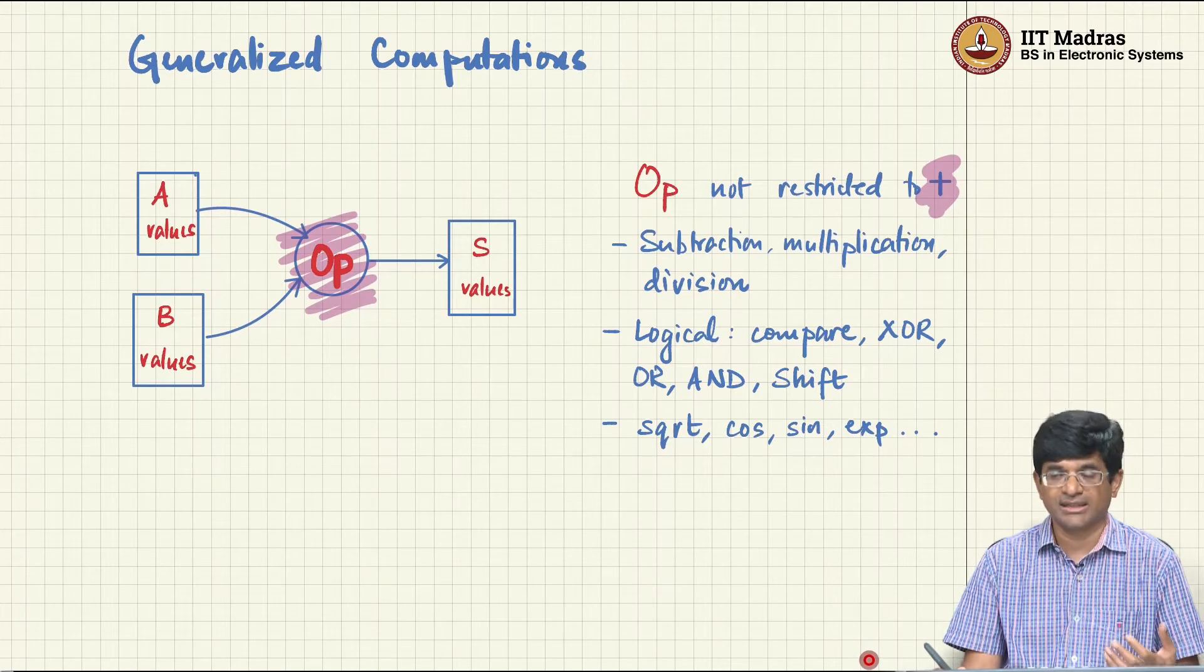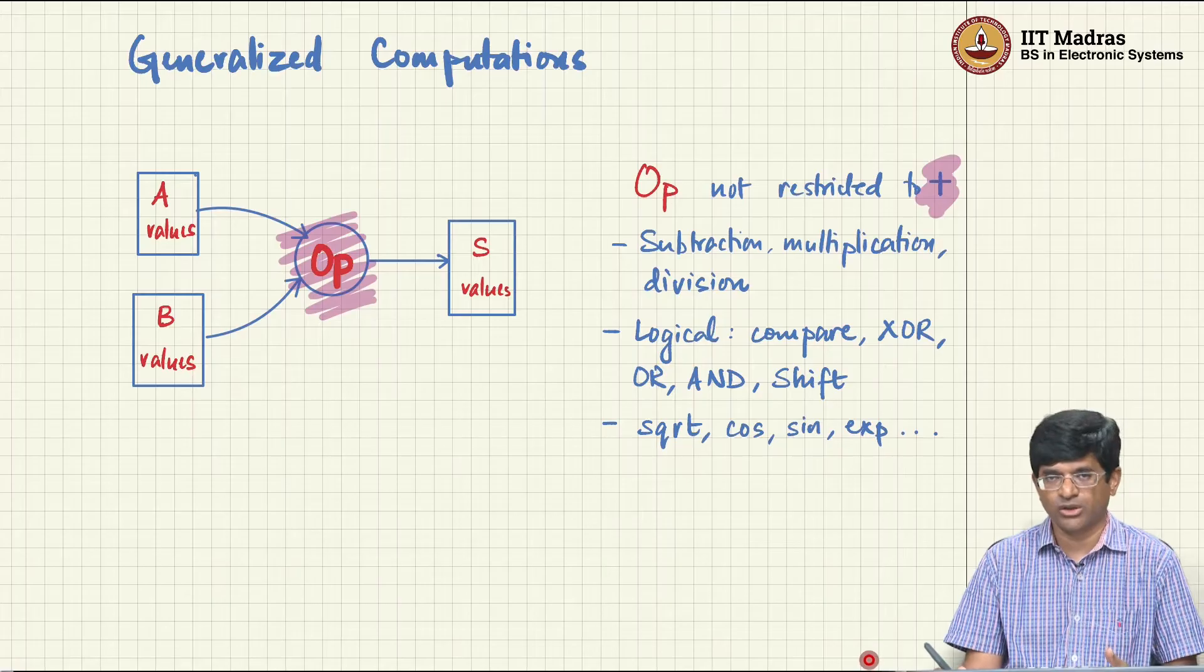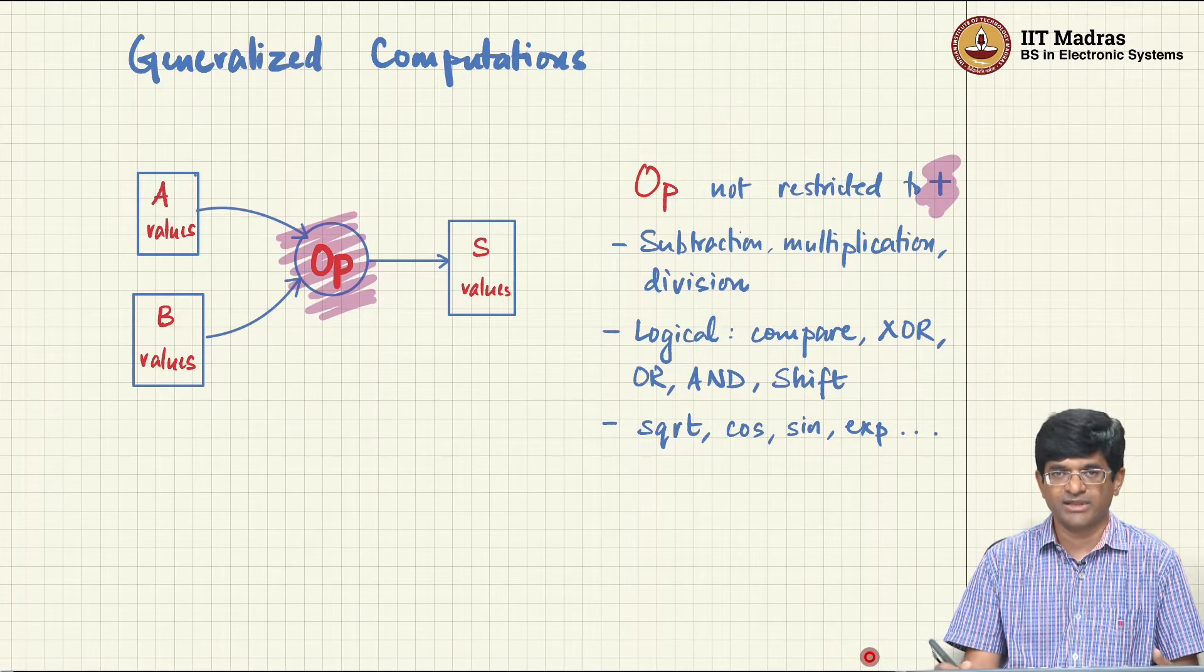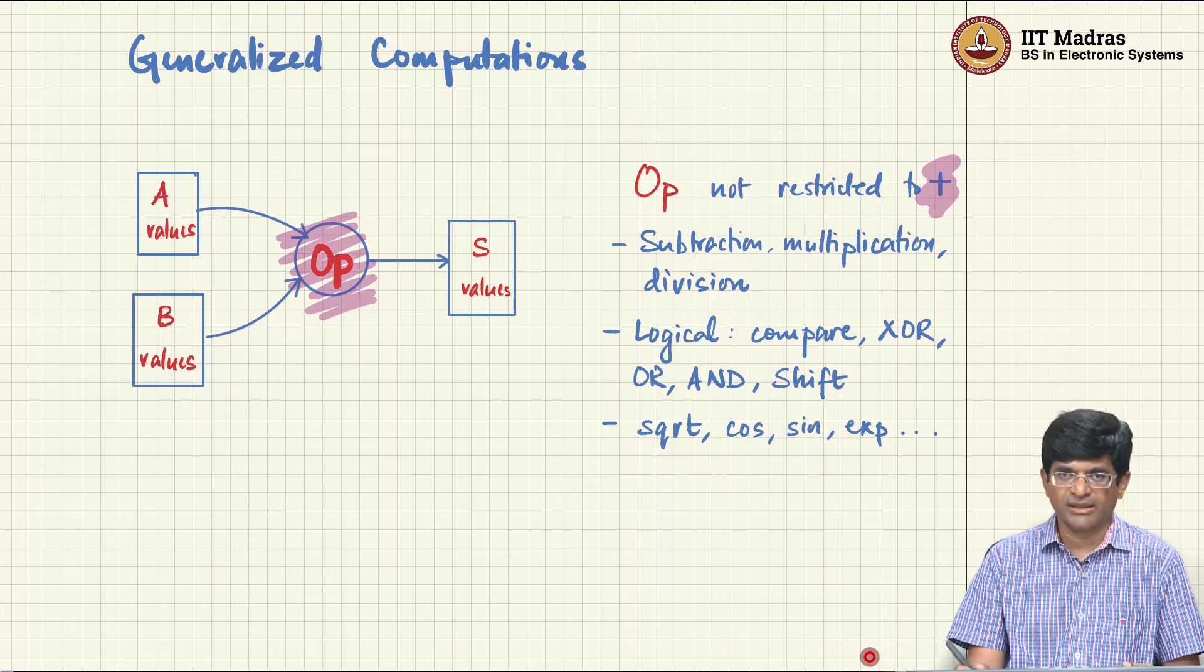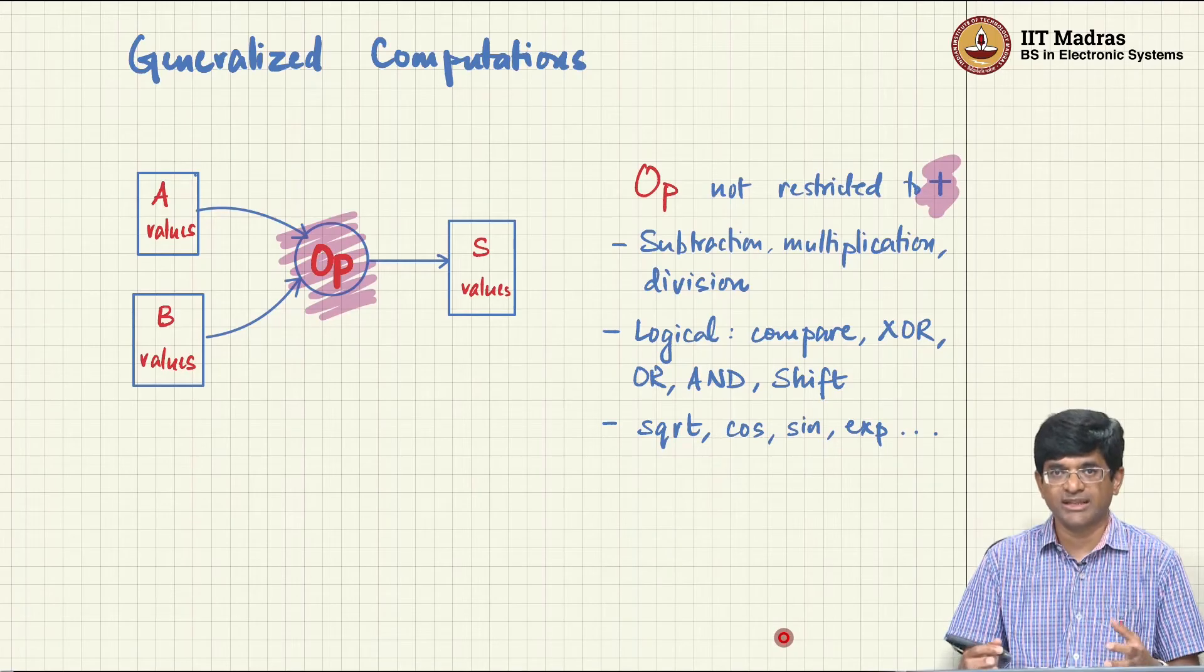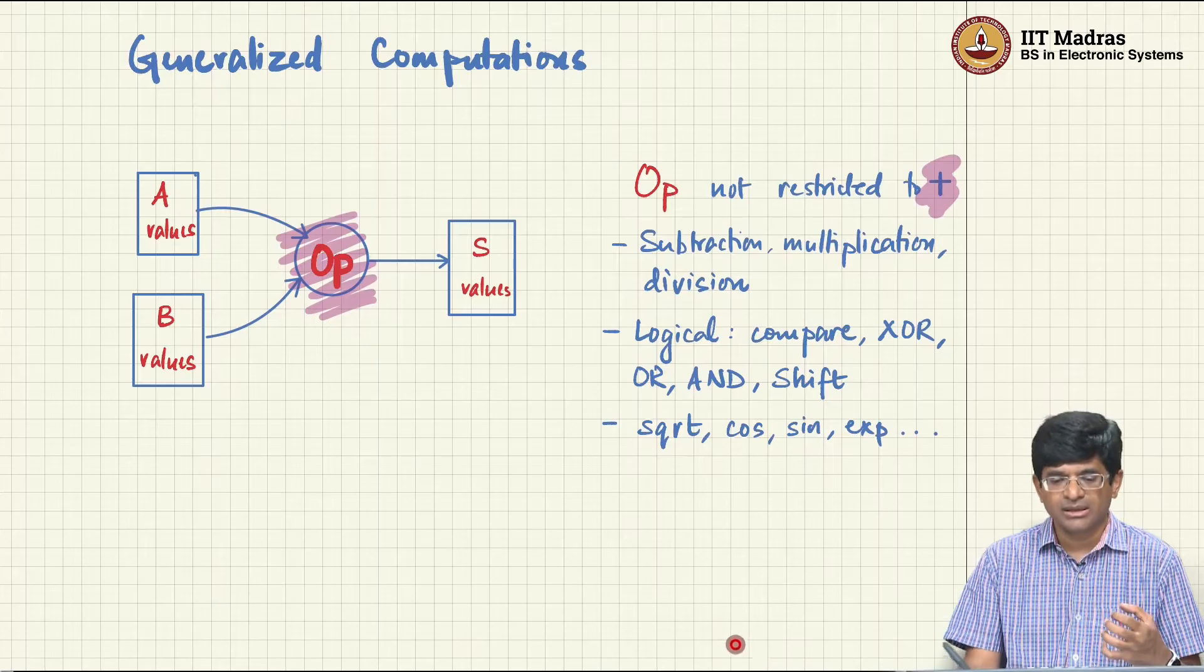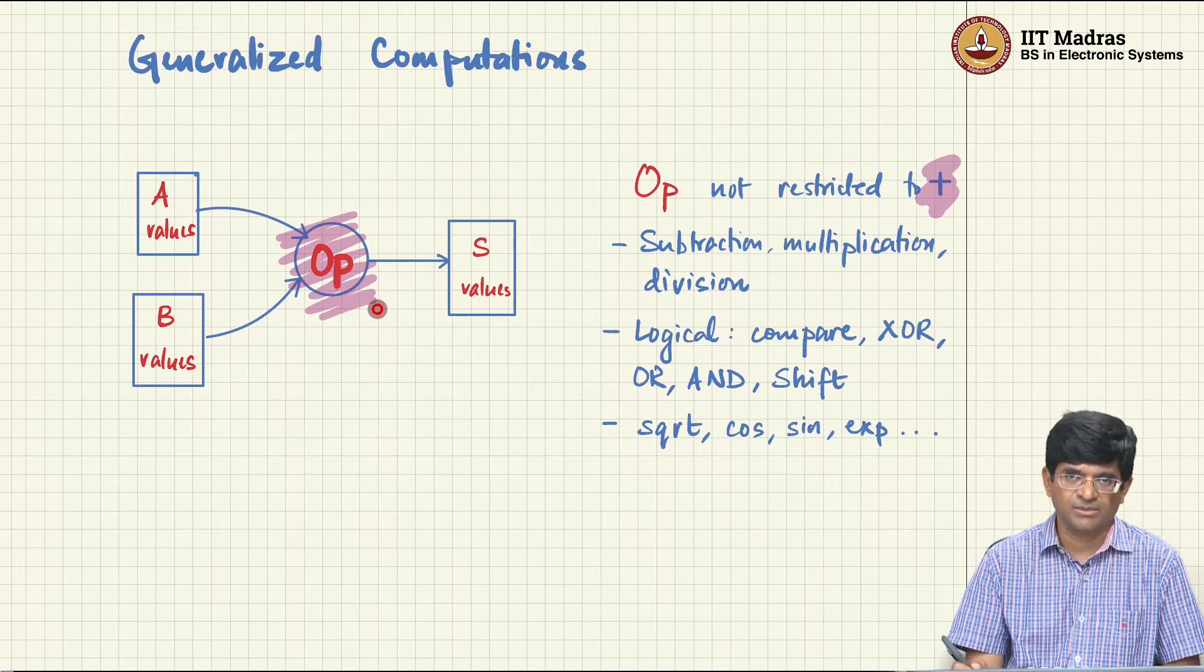In fact, there are many computers that cannot even do multiplication. Why? Because we know that repeated addition can be used in order to implement multiplication. So you do not strictly speaking need multiplication as one of the basic operations inside a computer. It can always be sort of emulated using other techniques. So this set of operations is by no means a requirement or even a complete set. There may be computers that are able to do only a subset of these. There may be computers that are capable of doing more than what I have listed out here. But the basic point that I want to make over here is this op that I had initially shown as a plus sign could be generalized.